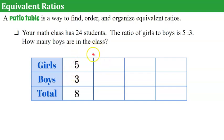Well, an equivalent ratio would be if I multiply everything by two. Five times two is ten. Three times two is six. So if I have ten girls and six boys, that's 16 students in the class. Notice that eight times two is 16. Everything here has an equivalent relationship. So the ratio 5:3 is equivalent to the ratio 10:6.